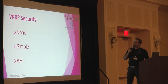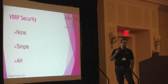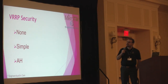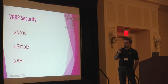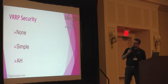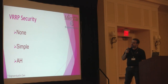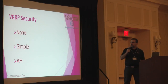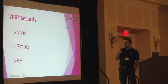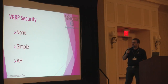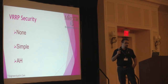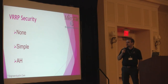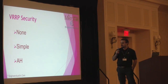We have three security options in VRRP. 'None' is just for inside the VLAN. We use 'simple' to avoid accidental misconfiguration. We use 'authentication header' for stronger protection — it can protect against misconfiguration and some IPv4 attacks, though not all of them.